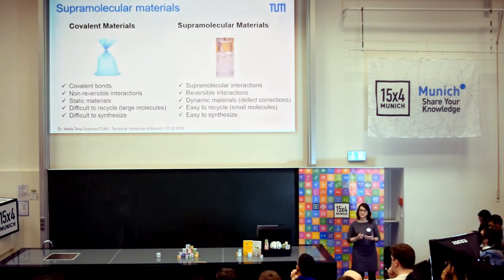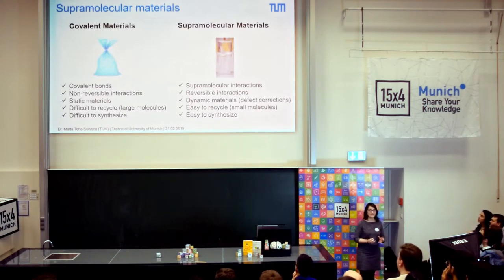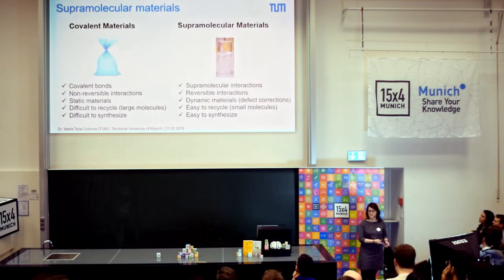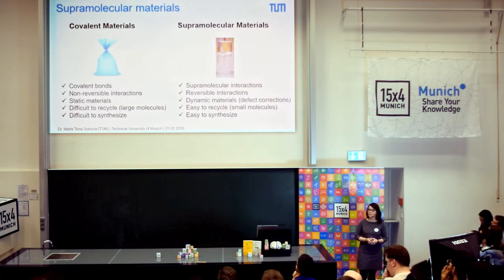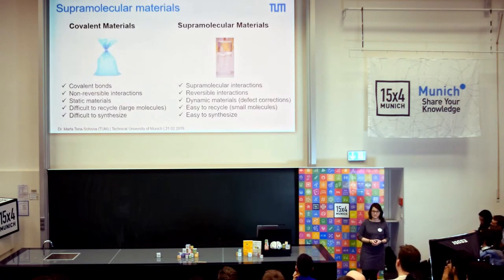When nature cares about something, it is because it is a really important process that has been optimized over billions of years, which means it is kind of perfect. And we, as scientists, always try to mimic nature in our synthetic materials. We care about the properties of these supramolecular materials because we consider they could have properties that are not accessible with covalent materials.